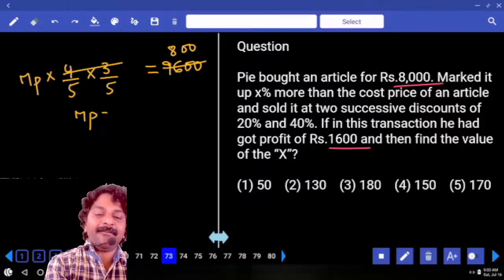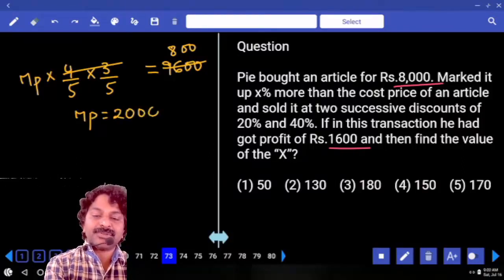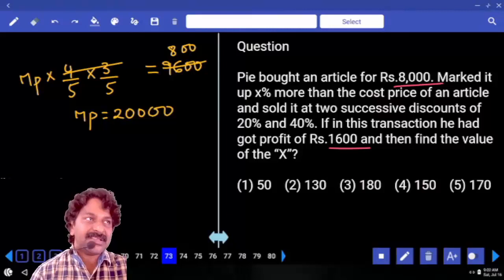And then how many zeros we have? Two zeros. That is 20,000. Market price is 20,000.